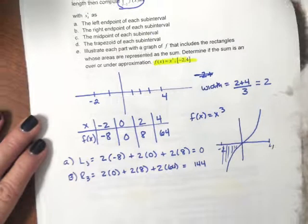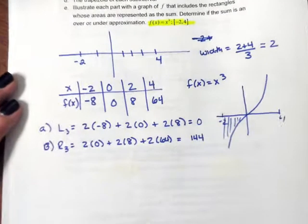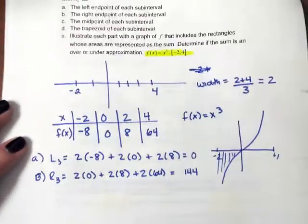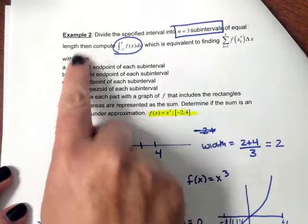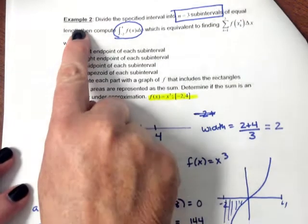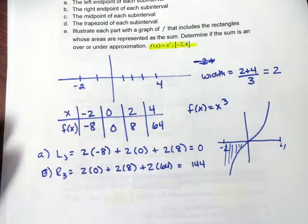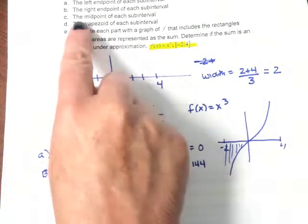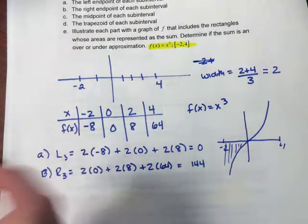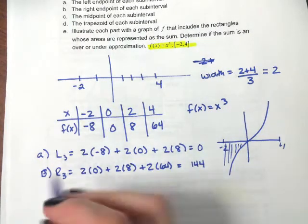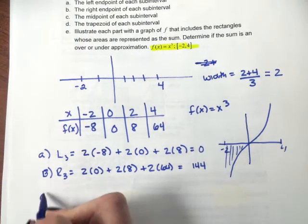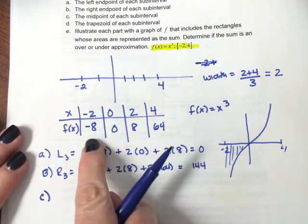To finish up with the Riemann sums, looking at example number two from our class notes, we did the left sum and we did the right sum. But looking at our function y equals x to the third, let's go ahead and do part c — the midpoint of each subinterval. Remember to do the midpoint.